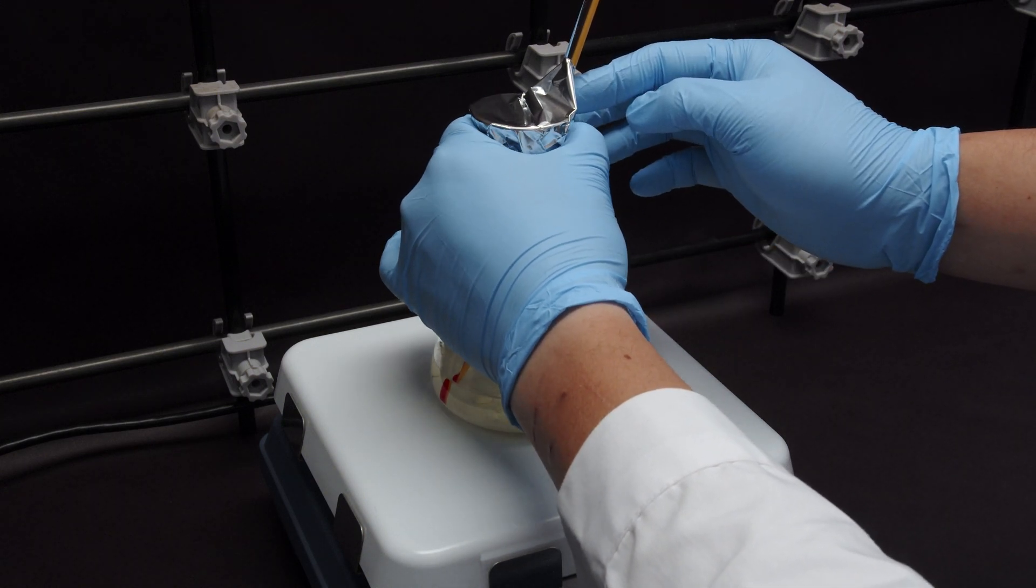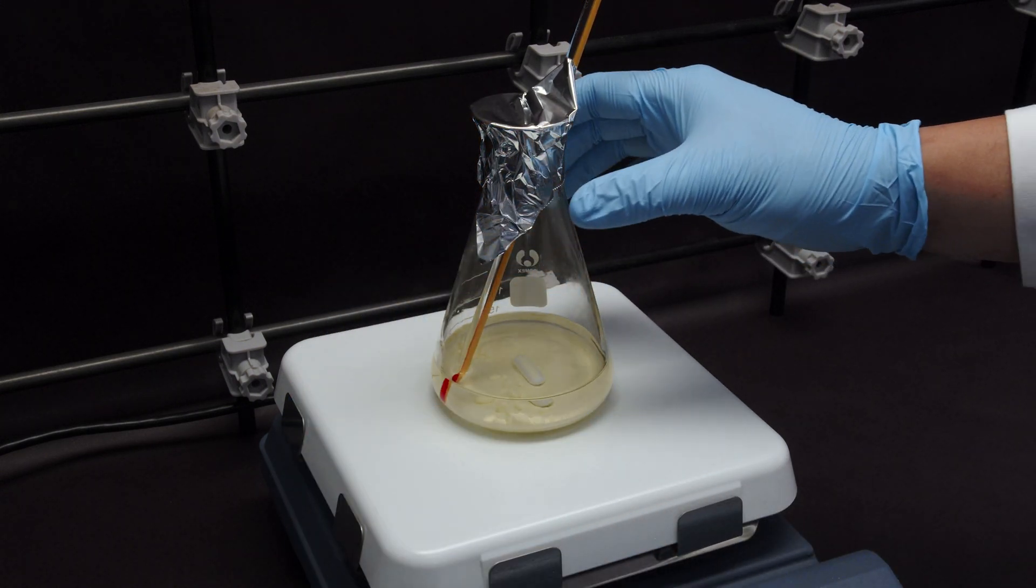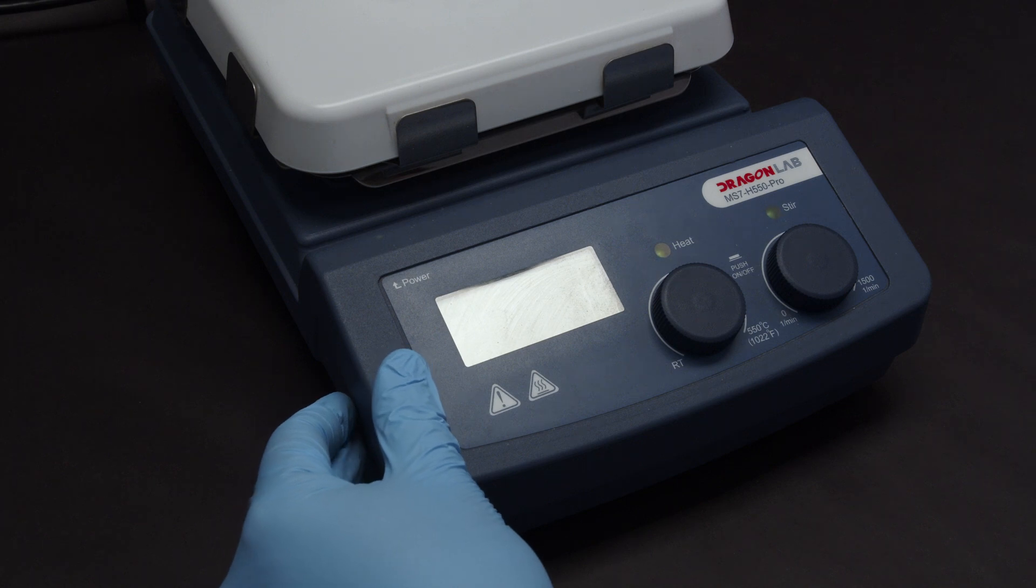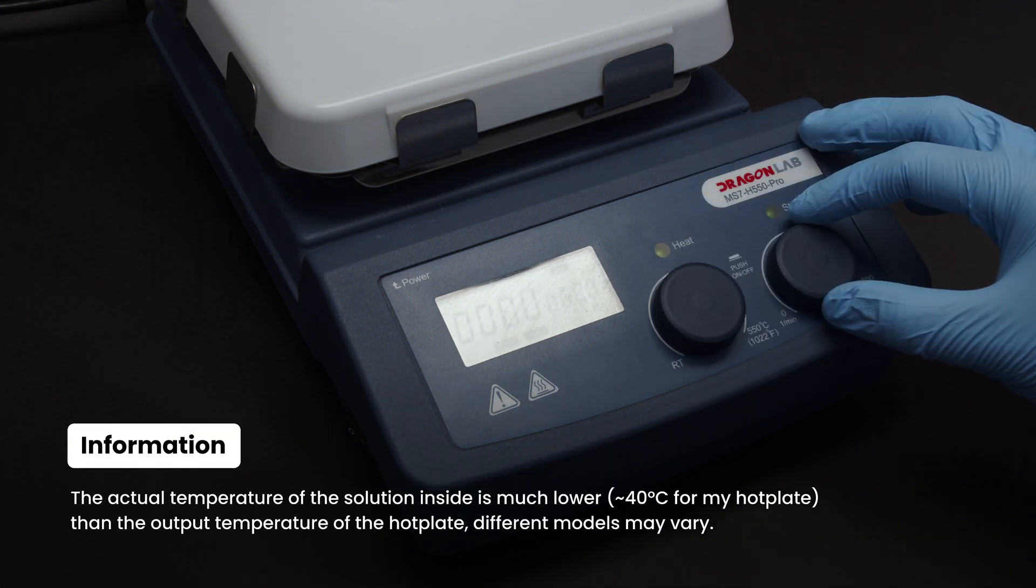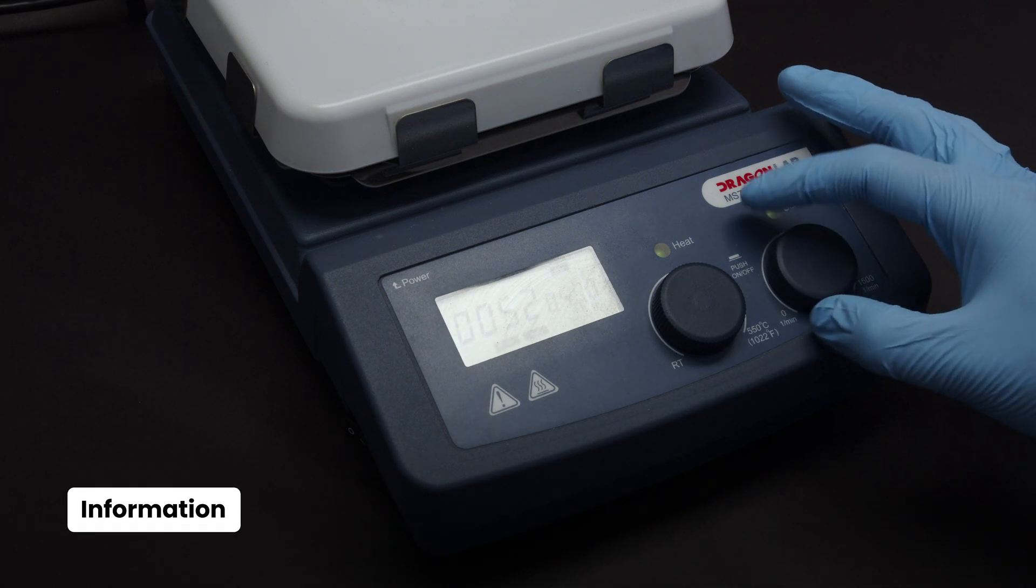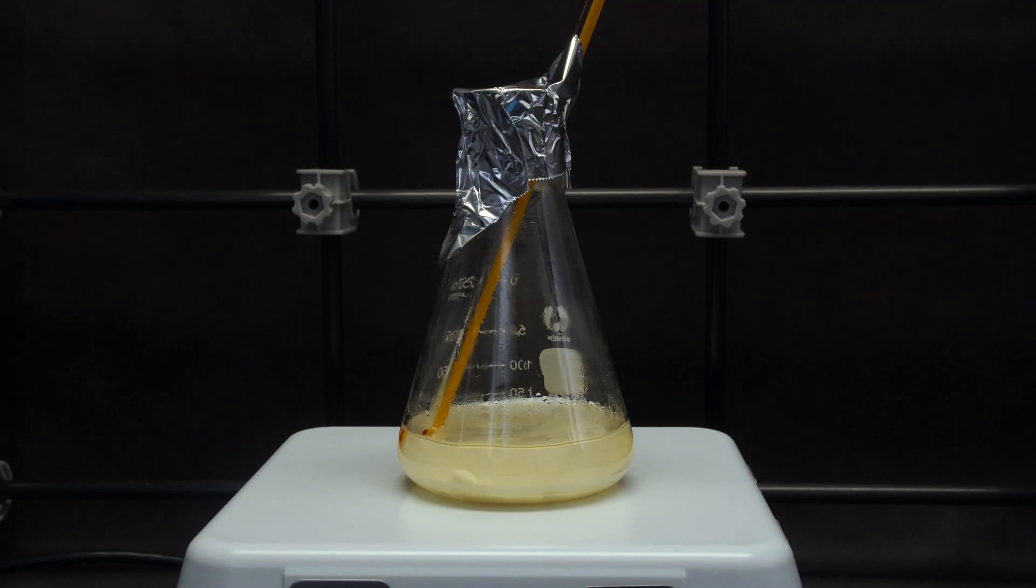You do not want to use a glass stopper here, as heating a closed system will risk explosion. Place the flask on a hot plate, turn on the heating to 150 degrees Celsius and stir. Sulfur powder should slowly dissolve into the solvent as the temperature rises, forming a bright yellow solution.